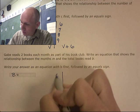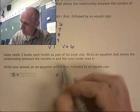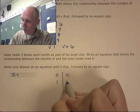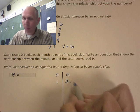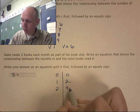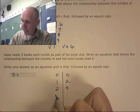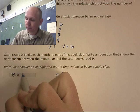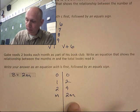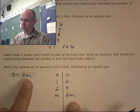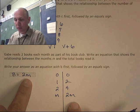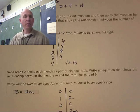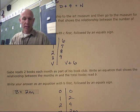At zero months, he's read zero books. At one month, he's read two books. At two months, he's read four books. At M months, he's read two M books. Does that work? So at zero months, zero books. One month, two books. Two months, four books. It seems to work. That's it.